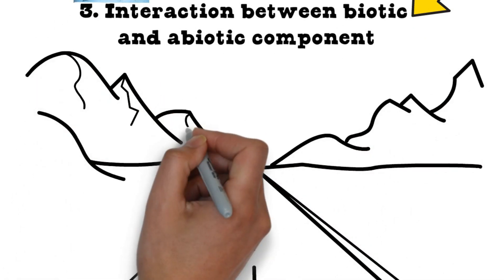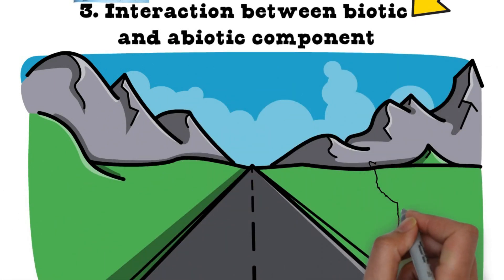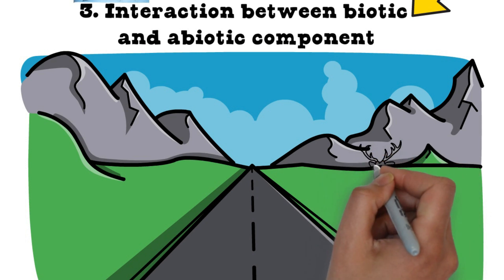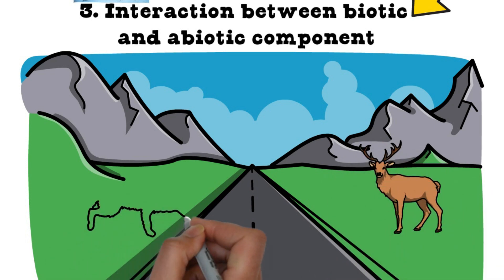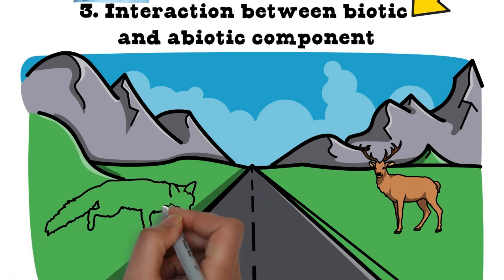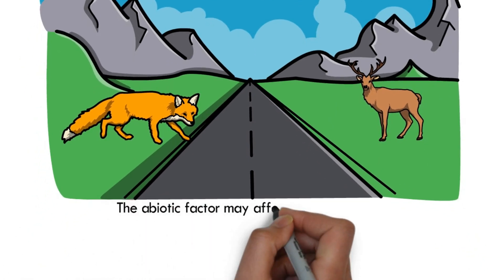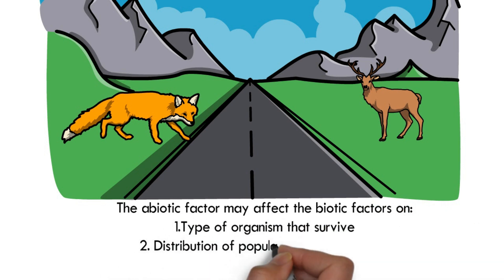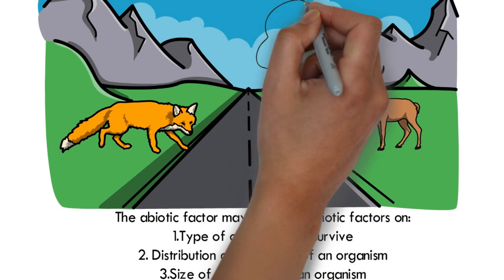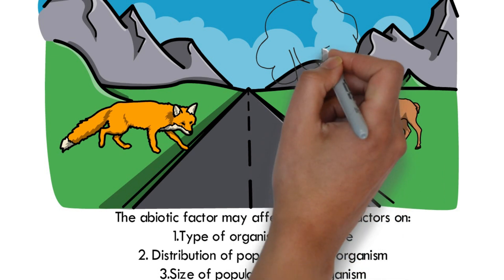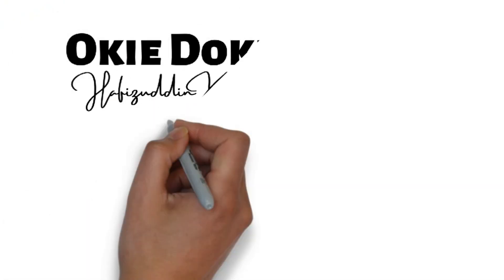The last component of the ecosystem is interaction between biotic and abiotic components. This is the interaction between living organisms and non-living elements, where there is an element cycle between biotic and abiotic factors. This is really important to sustain the ecosystem as a whole because these factors interact and influence each other. Examples of how abiotic factors affect biotic factors include the type of organisms that survive, the distribution of a population, and the size of a population. Three major examples of this interaction are photosynthesis, stimulation, and decomposition.